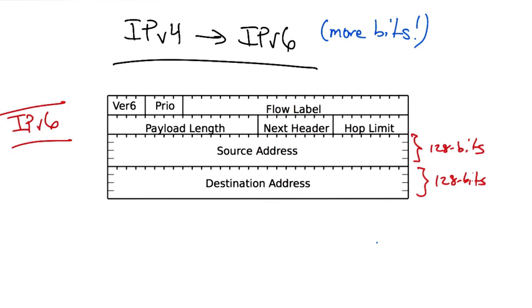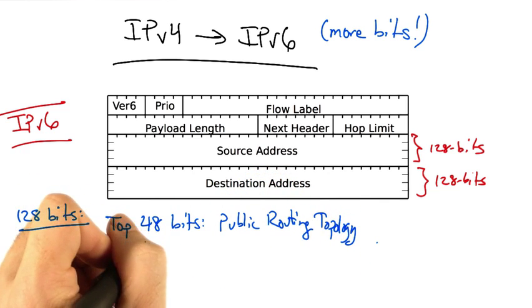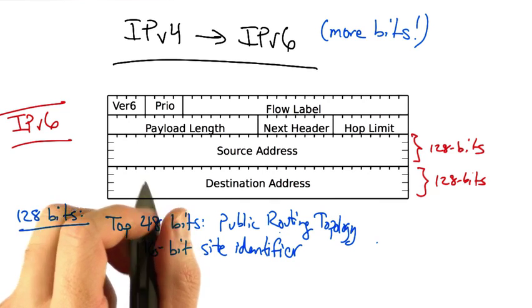Now, the format of these addresses are as follows. Of the 128 bits, the top 48 bits are for the public routing topology, and we have a 16-bit site identifier.